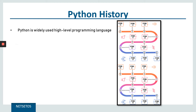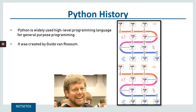Python is a widely used high-level programming language for general-purpose programming. It was created by Guido Van Rossum and was first released in 1991. The first version of Python came out in January 1994, and the latest version is 3.7.3, which was released in March 2019.